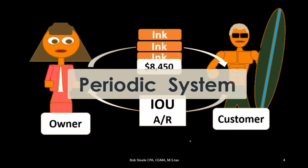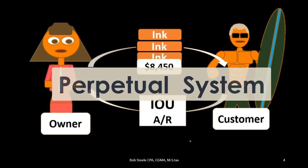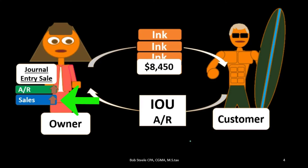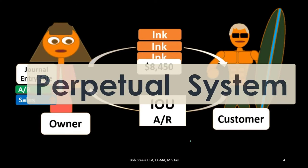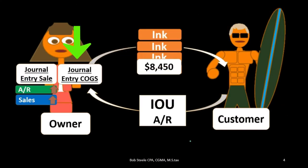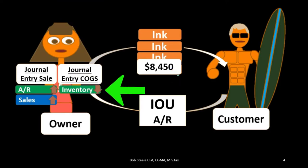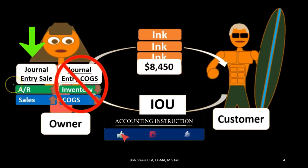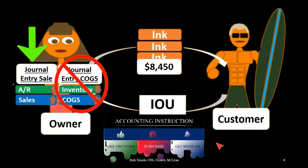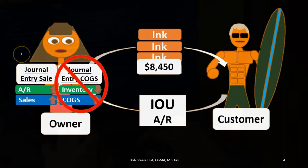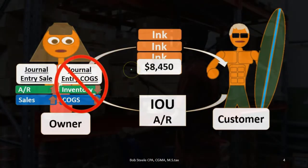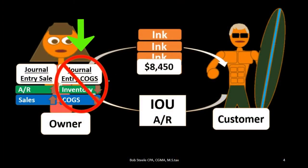If we look at a periodic system for this same sale, we're still going to have the first journal entry — accounts receivable going up and sales going up. But recall the second journal entry: in a perpetual system we would also record the cost of goods sold component at the point in time the sale was made. In a periodic system we do not. We only record the first component, typically because our system may not be sophisticated enough — a clerk making a sale may only know the sales price.